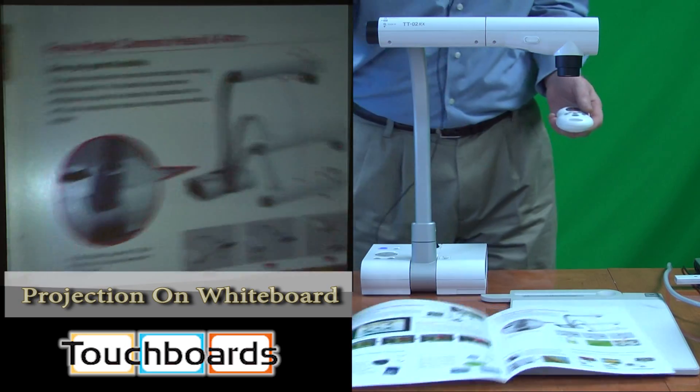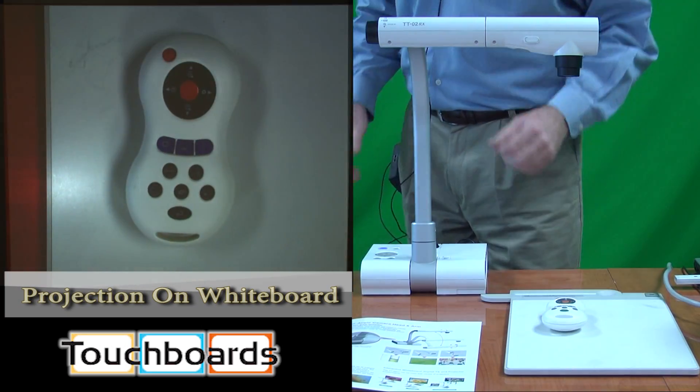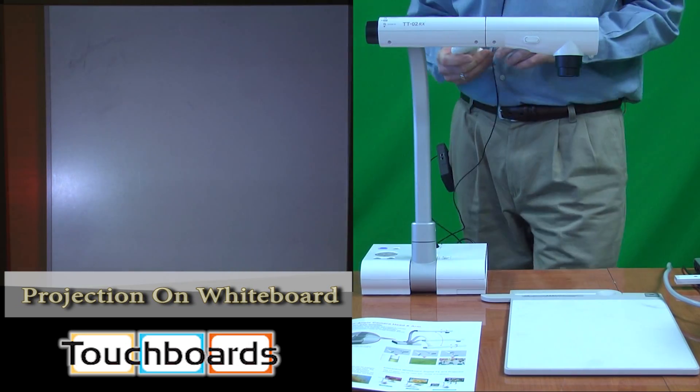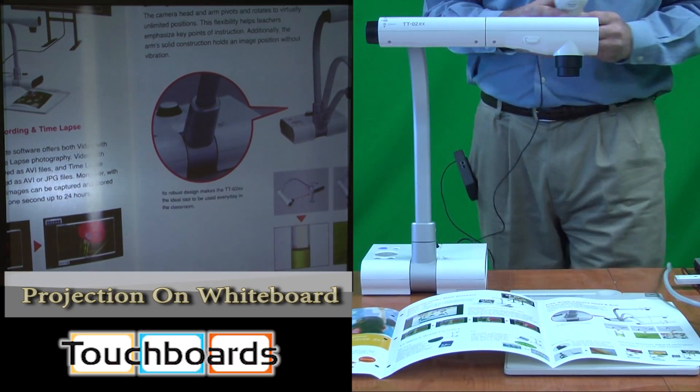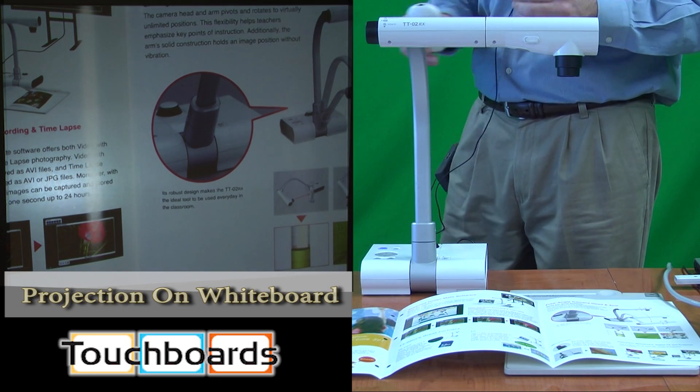The TT also comes with a very handy remote control, and I'll just put it up on the screen so you can see it in full detail. This allows us to change all of the menu settings for the camera, and also to highlight specific areas, unmask materials, much like you would do with an overhead projector.